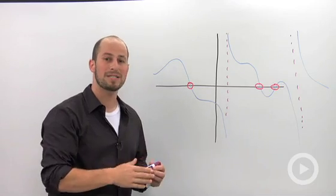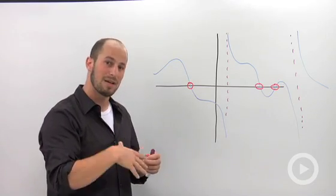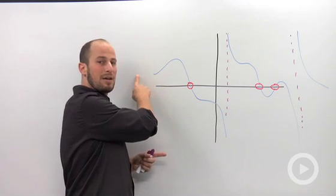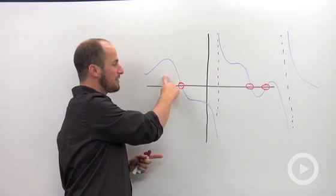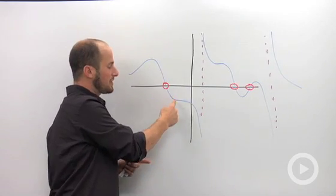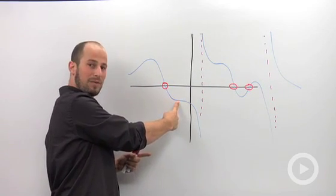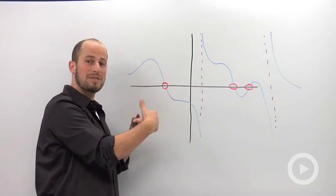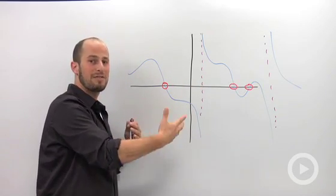Those are the only possible places a graph can change from positive to negative. So what that means is if the graph is going to be positive somewhere over here, we also know that it's going to be positive up until the next zero or the asymptote. If the graph is going to be negative at some point in here, we know it's going to be negative between the zero and the asymptote because there's no other place for that graph to possibly change from positive to negative.